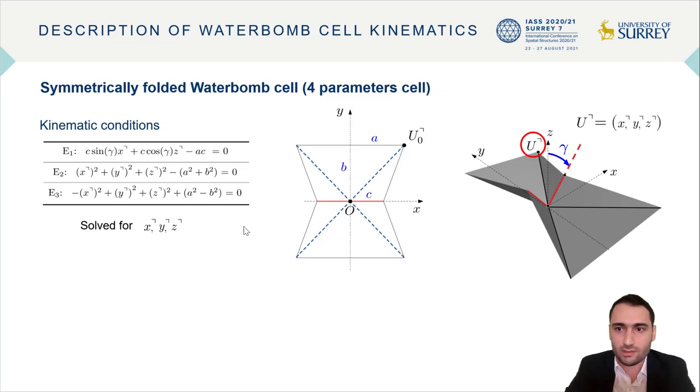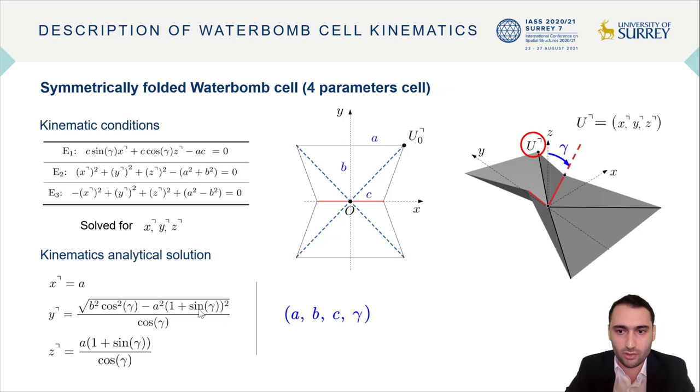And by solving these conditions for upper right corner coordinates, the whole kinematics is defined because the positions of all other corner points can be calculated using symmetry. The obtained closed form solutions are shown here, which are all functions of the four parameters a, b, c, and gamma.